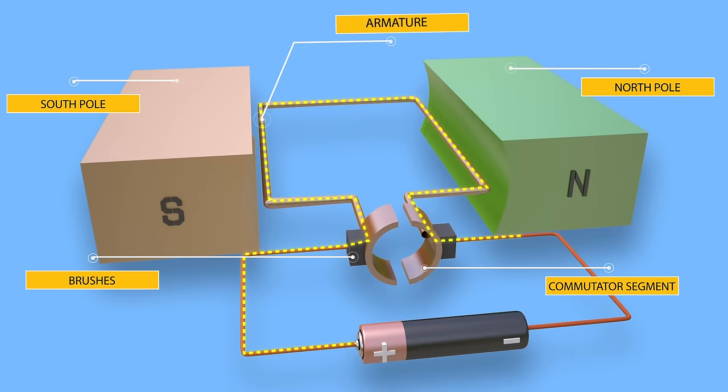One single turn of conductor is placed between two opposite poles. If we start to supply DC via the commutator system, current will start to flow. The positive terminal of the battery is connected to the left conductor of the turn, and the negative terminal is connected to the right conductor.